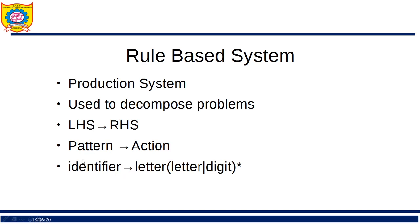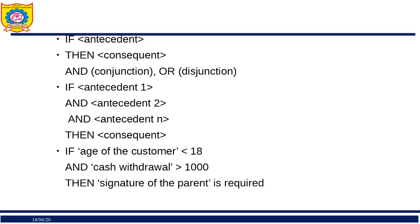The pattern is the antecedent and the action is the consequent. Rules are written in the form: if antecedent then consequent. If a matching pattern is found, then a corresponding action is taken.